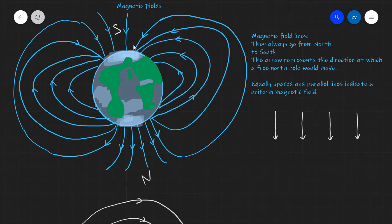Additionally, the arrow represents the direction in which a free north pole would move. If I had a free single north pole and placed it here, it would be attracted towards the south and repelled by the north, following this trajectory.